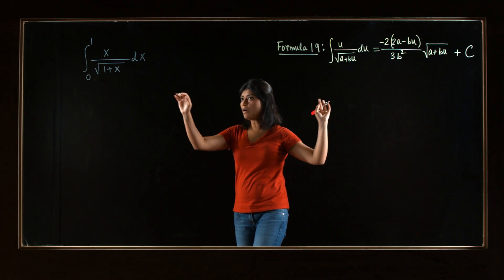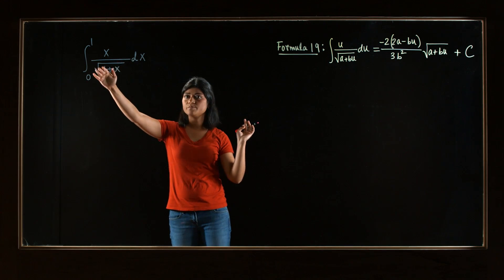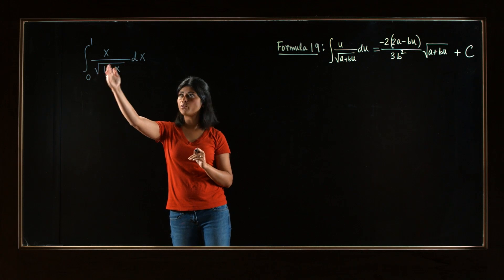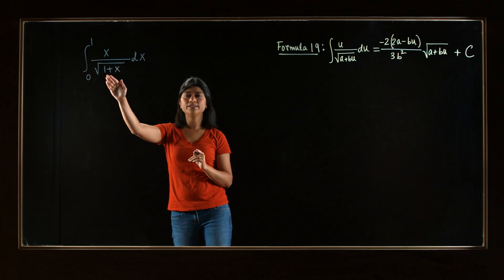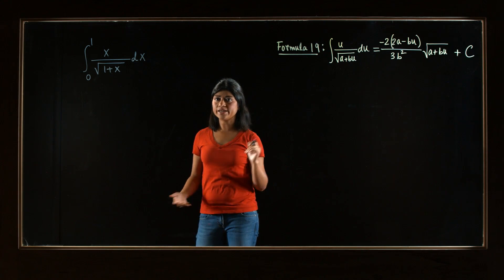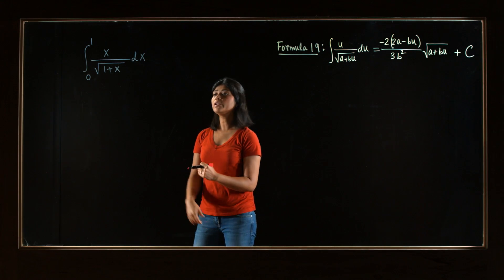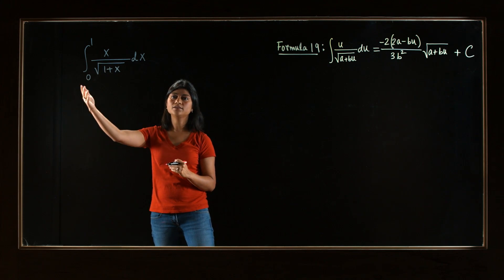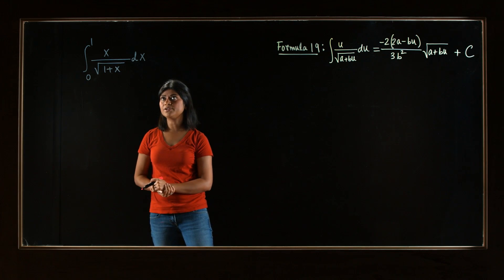And note, in our problem, we have a similar-looking function. In the denominator, we have a square root, and inside, we have a linear factor. So we might be able to apply formula 19 to solve this problem. Well, the indefinite integral, and then we have to plug in the limits to evaluate the definite integral.